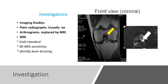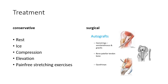For investigations, we can do X-rays, ultrasound, arthrogram, and MRI. MRI is the gold standard investigation, with 90 to 98 percent sensitivity. It can identify bone bruising clearly. An MRI image is included here where you can actually notice the changes. Once we know the level of ACL tear from the MRI, we proceed with the treatment plan.